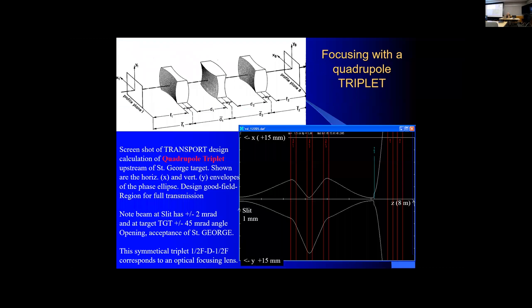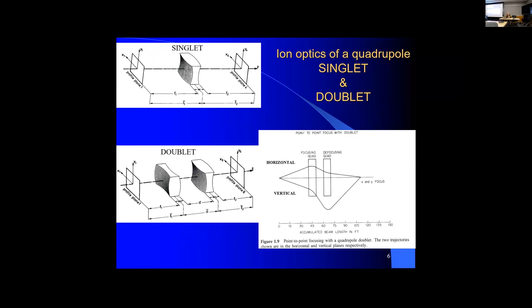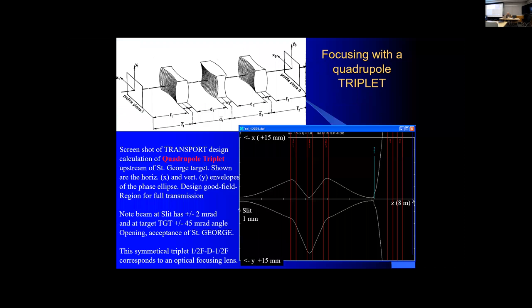A triplet would be needed. From the calculation and simulation examples, you see the entrance and exit angles are different, and in the vertical direction they are different from the horizontal plane as well. So it's not a one-to-one imaging like you'd expect from a good optical lens. For that, you need a triplet with a drift at the beginning, drifts between elements, and at the end.